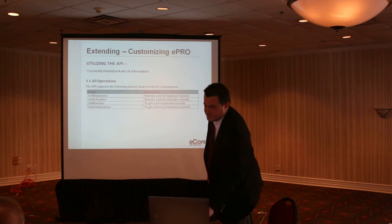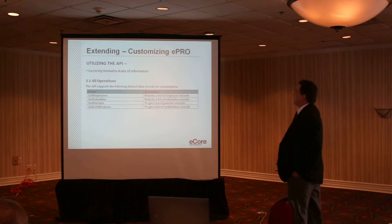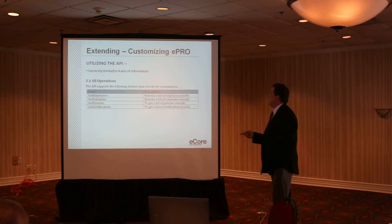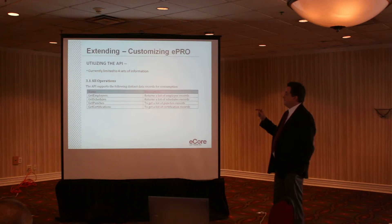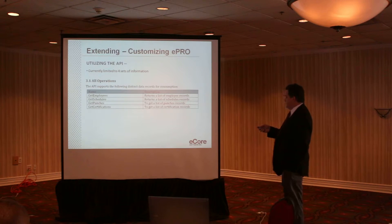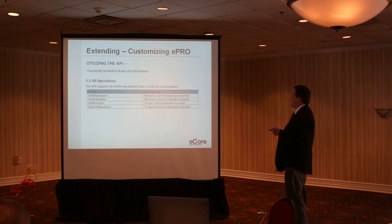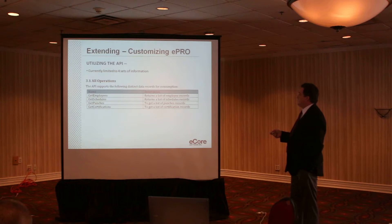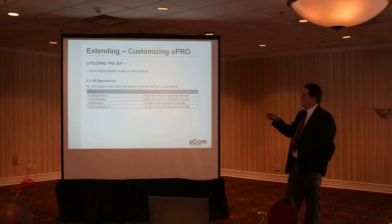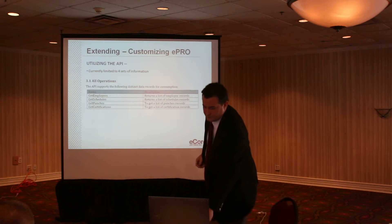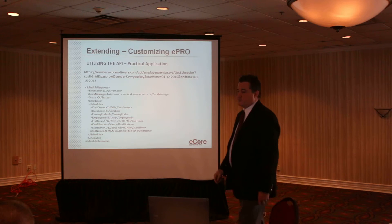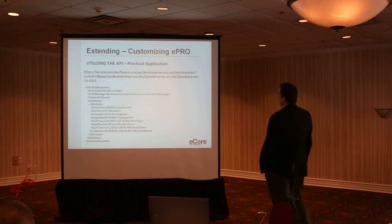That's just an example of some of the things you can do with it. For the API, currently there are four sets of information you can get: employee information, schedules, punches, and certification records. This is a fairly new feature, so I'm hoping we can expand on it in the future. That information gets returned to you in an XML format, which is one of the more common query formats being used now.